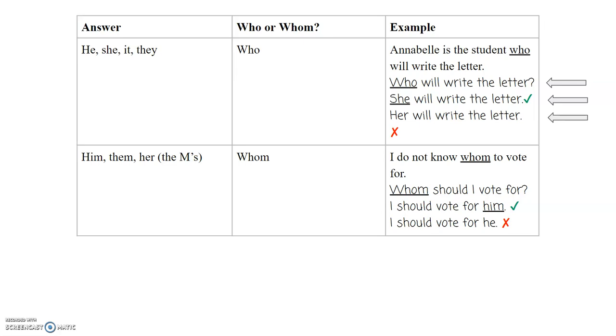If we look below, we have the sentence, I do not know whom to vote for. Sometimes you will have to rearrange the words. It won't be word for word when you're creating your question. In this one, we're going to rearrange a little bit, but keep the essence, which is, whom should I vote for? The answer is, I should vote for him, which ends in an M. So whom is correct, versus I should vote for he, which is incorrect. It doesn't make sense.